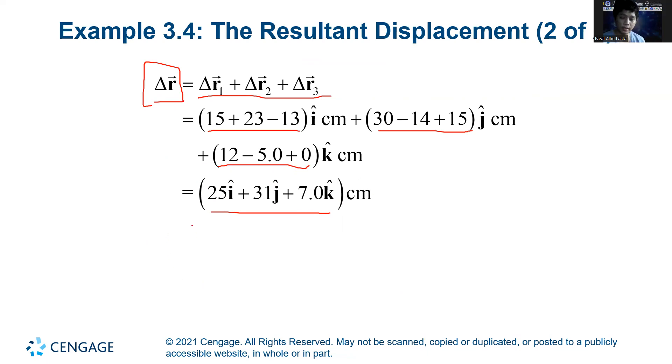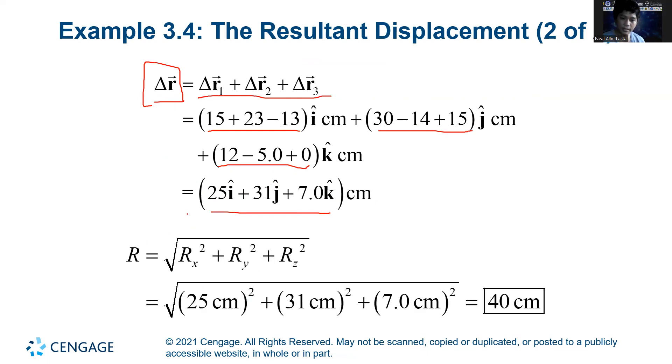So if you want to solve for the magnitude, you just use this three-dimensional version of the Pythagorean theorem, where of course rx is 25, ry is 31, rz is 7. And you will get 40 centimeters.